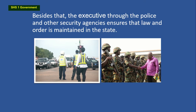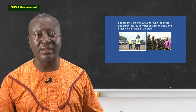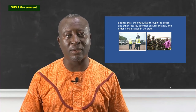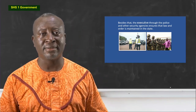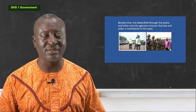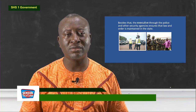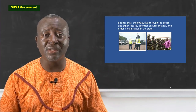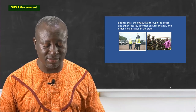The executive, through the police and other security agencies, ensures that law and order is maintained in the state. During the recent restrictions and lockdown, the police were in the streets all over, especially within Accra and Kumasi, ensuring that people obey the laws. The court also maintains law and order — if someone abuses your rights, you have the right to take the person to court to seek redress. Police, the courts, and other security agencies maintain law and order in the state.